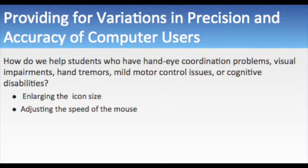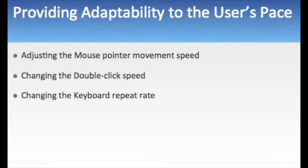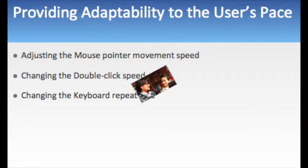The last item is providing adaptability to the user's pace. This can be done by adjusting the mouse pointer movement speed, changing the double-click speed, or changing the keyboard repeat rate. Both Macintosh and Windows computers include these features.